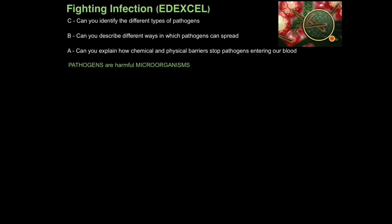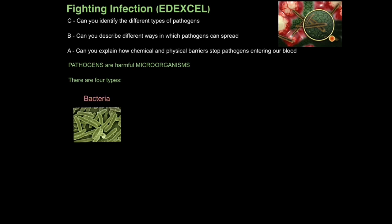Harmful microorganisms are given the name pathogens. Think of the words 'psychopath' and 'pathological' — things that harm you. So pathogens are harmful microorganisms. There are four types you need to know for Edexcel. Firstly, bacteria, of which there are three types. Here we've got the rod type, but you can also get spiral bacteria and round-shaped bacteria too.